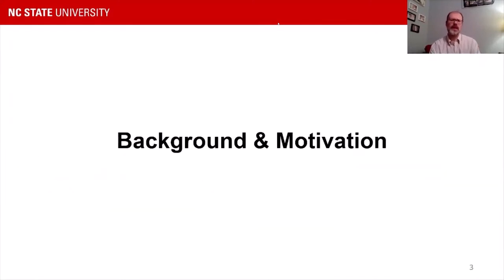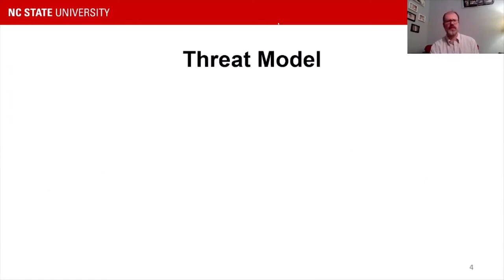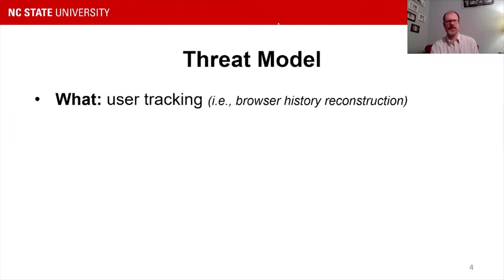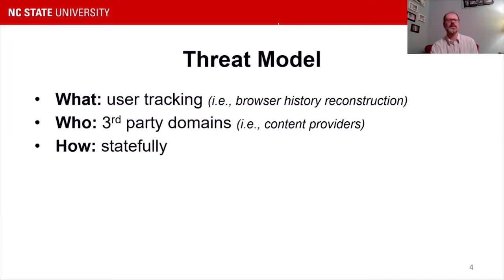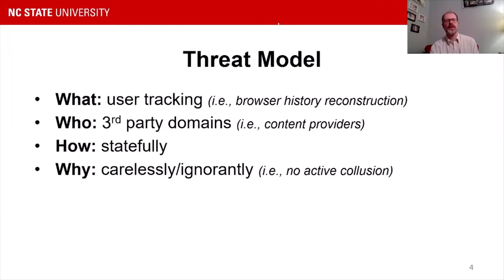The motivation and background behind these challenges starts with our threat model. We are concerned with user tracking — the history reconstruction of user browsing across the web — by third-party domains. These are third parties that provide content such as advertising frameworks or analytic scripts, and that they are doing this statefully. We define our scope to be stateful, cookie-based tracking as opposed to fingerprint-based tracking, ruling out active collusion between first and third parties.